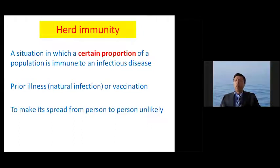So what is herd immunity? It is a situation in which a certain proportion of a population is immune to an infectious disease, through prior illness or vaccination, which makes the spread from person to person unlikely.